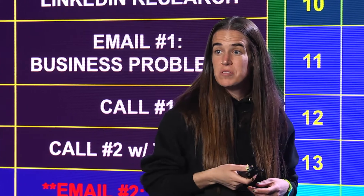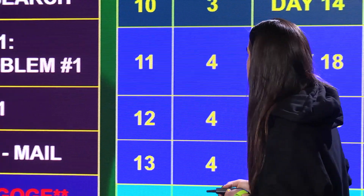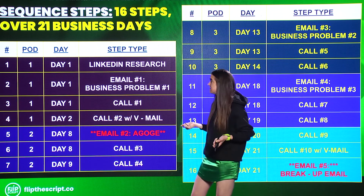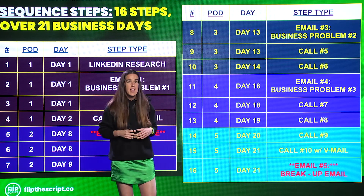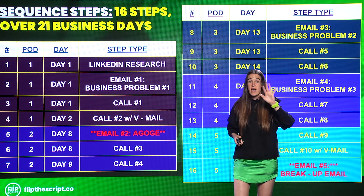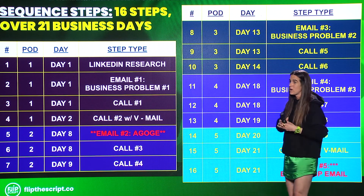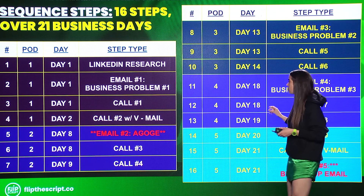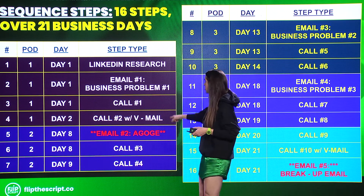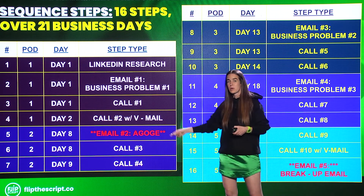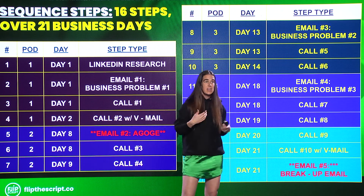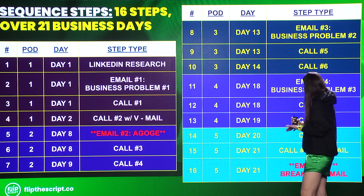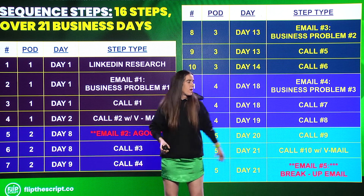Now I want to go into where to add content into a sequence. I recommend a sequence with 16 steps over 21 business days: five emails in total, 10 calls, two voicemails along the way, getting more aggressive near the backend. A great place to add value is email two — a reply email to email one, where I use a personalized premise. Email two just says 'any thoughts?' and in the P.S. I say something like 'I thought you might like this article on X, Y, and Z.' The second great place to add value — both marked in red — is the breakup email.